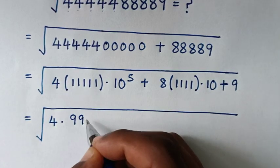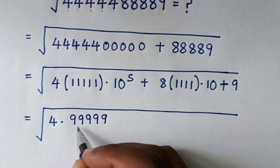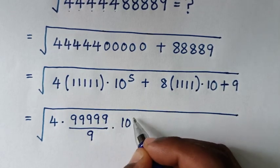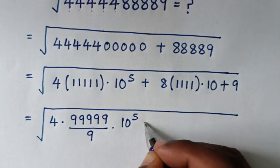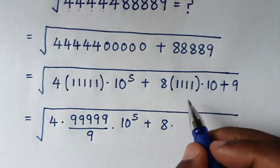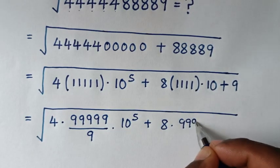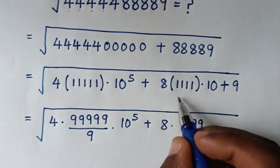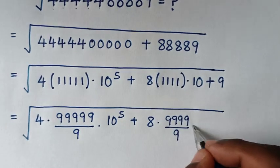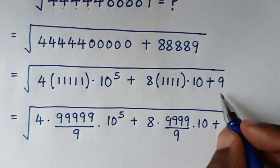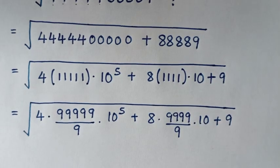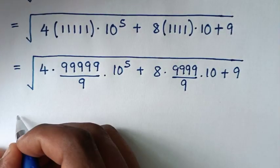This is the same as: (999999999 over 9) times 10 to the power of 5, plus 8 times — this here is same as 99999 (four 9s) — over 9 times 10, then plus 9.